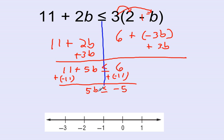And my final step is to divide by 5. If I divide by 5, I get b is less than or equal to negative 1. So that is my solution to the inequality. b is less than or equal to negative 1.